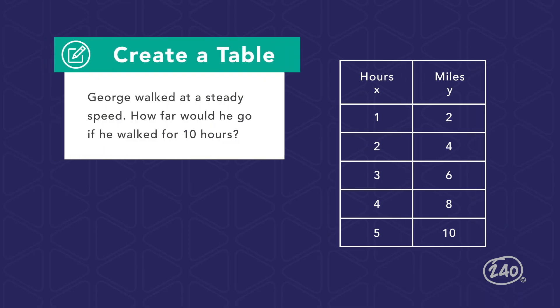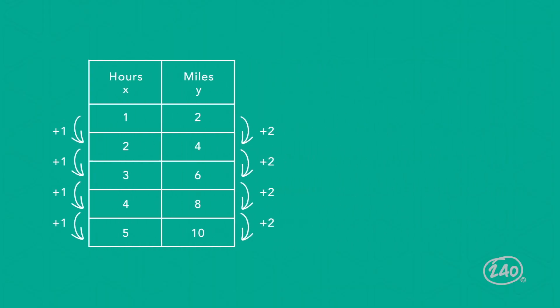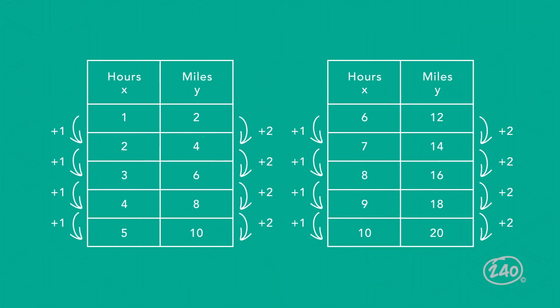One method would be to create a table of values based on the ordered pairs provided on the line. Seeing the ordered pairs in table form may help you identify a pattern that could be continued to get the number of hours desired. In the table, notice that as the hours increased by one, the miles increased by two. To determine the number of miles traveled in 10 hours, extend the table, counting by ones for hours and twos for miles. Now that the value for 10 hours is included, we can determine that if George walked for 10 hours, he would travel 20 miles.